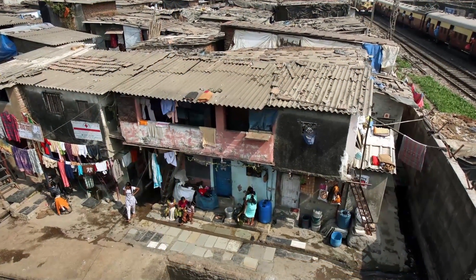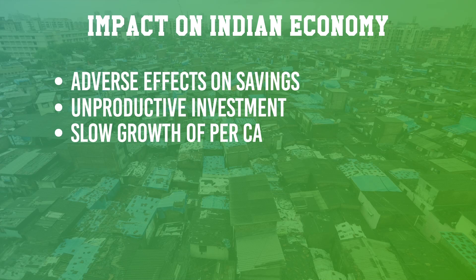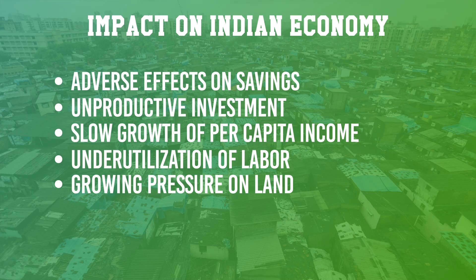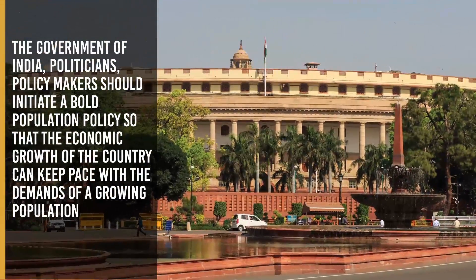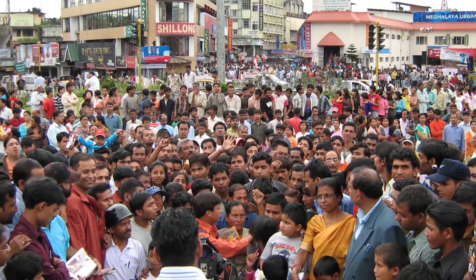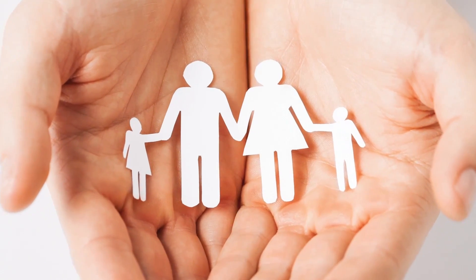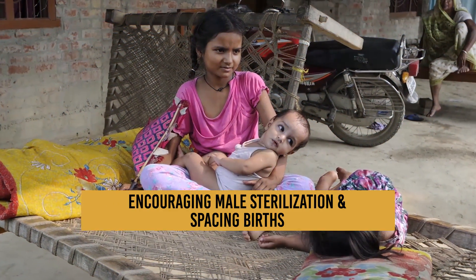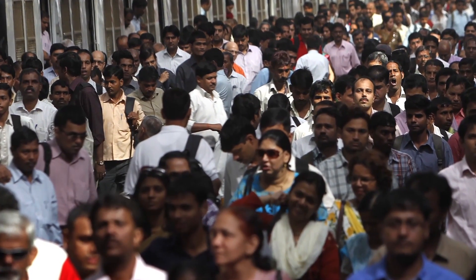Population explosion hinders economic development and should be controlled effectively. The adverse impacts on the Indian economy include: adverse effects on savings, unproductive investment, slow growth of per capita income, underutilization of labor, growing pressure on land, adverse effects on quality of population, and adverse social impact. The Government of India, politicians, and policymakers should initiate a bold population policy. Steps already implemented but needing more emphasis include: increasing welfare and status of women and girls, increasing awareness of contraceptives and family planning, encouraging male sterilization and spacing births, free distribution of contraceptives, female empowerment, and more healthcare centers for the poor. Experts are hopeful that increased public awareness and strict population control norms will lead to economic prosperity.